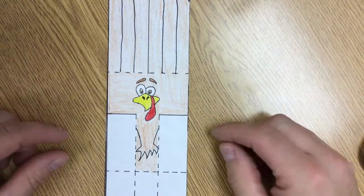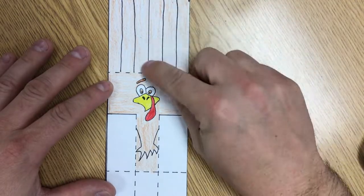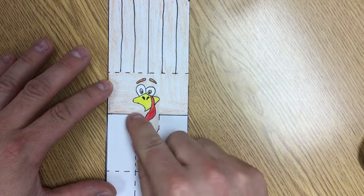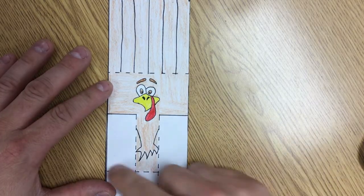Now to make my turkey copter I'm simply going to be cutting along the dark line. So here's a dark line, this is a dark line, this is a dark line, and then folding on the dotted lines.